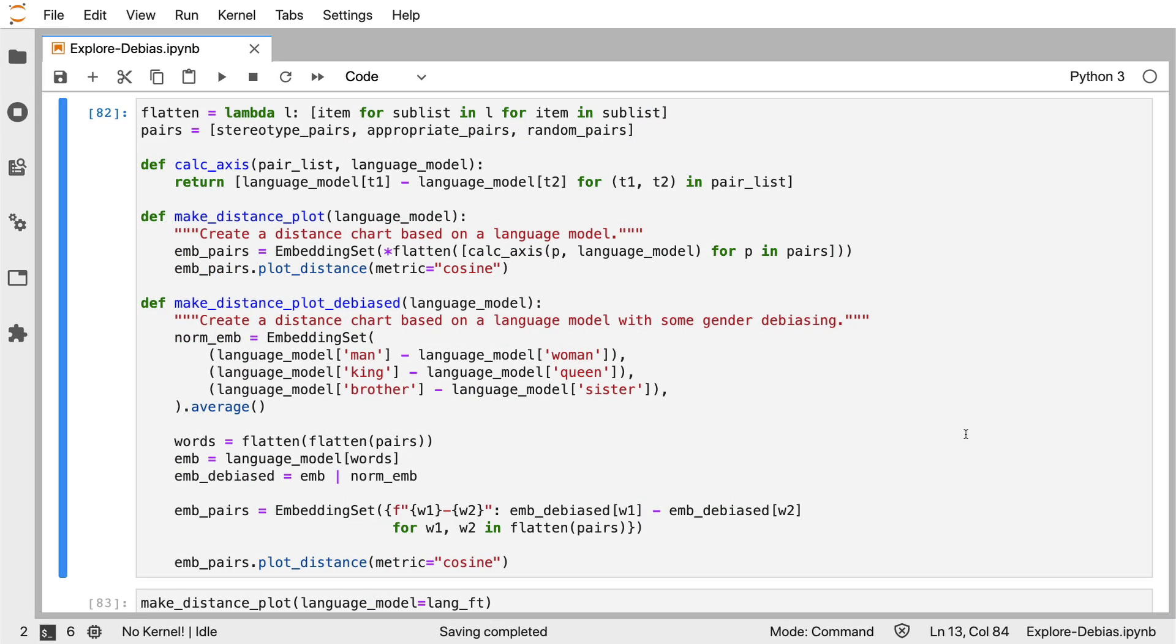So just very briefly, I would like to show the code that does the debiasing. Now, there's a lot of code on screen, but the main part that's important is this part. What I'm doing is I'm saying, hey, have a look at man, woman at that direction. Also take king, queen into account, brother and sister. And then take those three directions that could represent the gender axis and then average them. And then the embedding that I end up with here, I could argue that that embedding represents the gender axis. And that's what I'm using to project away from. And I'm doing that in this line of code here in the what lies package that I am using. The pipe operator stands for project away. So every vector in this embedding set over here is going to be projected away. Away from what? Well, this normalized embedding.